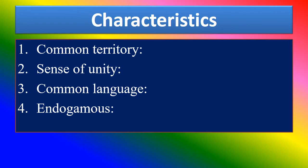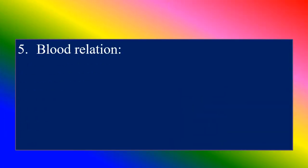Fourth characteristic: endogamy — life and death within the tribe, or selecting a spouse within the tribal group. Fifth: blood relationship — due to endogamy, every individual in the tribal society are relatives.